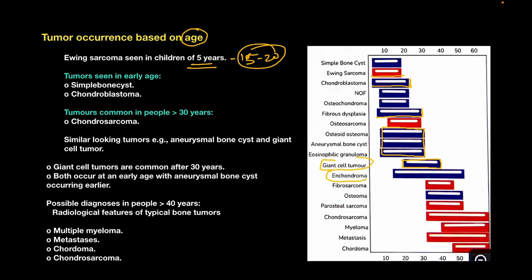Enchondromas are generally seen within the age of 10 to 50 years, while fibrosarcoma, parosteal sarcoma, chondrosarcoma, myeloma, metastasis, and chondroma are generally seen after 30 years of age. This is the common classification of bone tumors according to age.